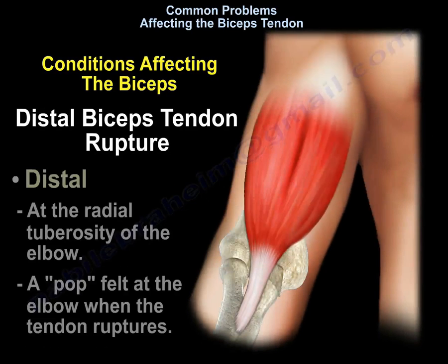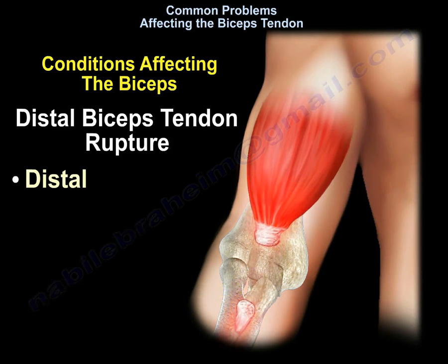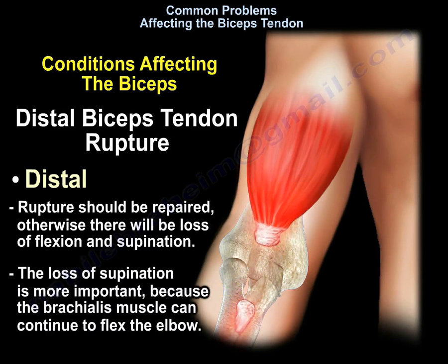On the other hand, a distal biceps tendon rupture is very important. The muscle ruptures at the radial tuberosity of the elbow, and a Popeye deformity is felt at the elbow when the tendon ruptures. The rupture should be repaired; otherwise there will be loss of flexion and supination. The loss of supination is more important because the brachialis can continue to flex the elbow.